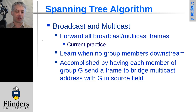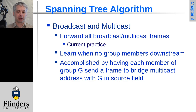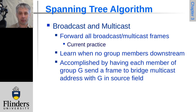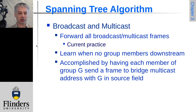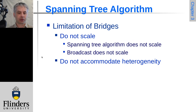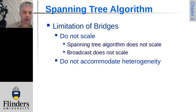In practice, spanning tree will by default still forward all broadcast and multicast frames through the pruned tree. Ideally, we'd want to learn when there are no group members in a multicast group and stop sending to avoid congesting the network. We do this by having at least one group member of each multicast group send a frame to the bridge, indicating interest, so multicast is delivered only onto the network segments where it's required.